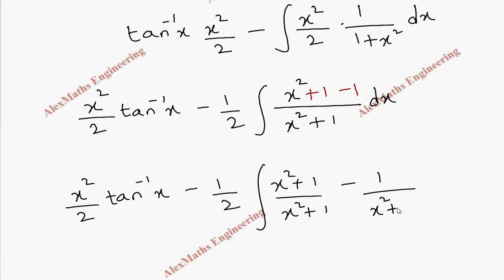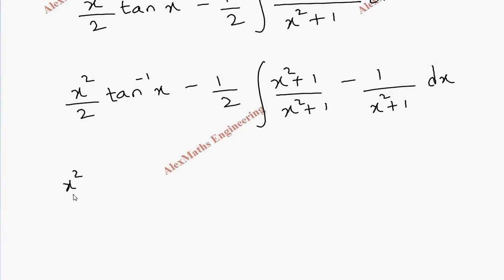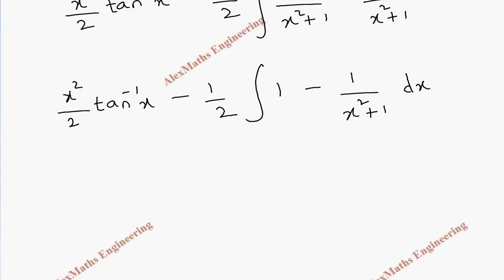Now the first term is x square by 2 into tan inverse x minus half integral, this is 1 and this is minus 1 by x square plus 1 dx. Let's integrate these two terms in the usual way.